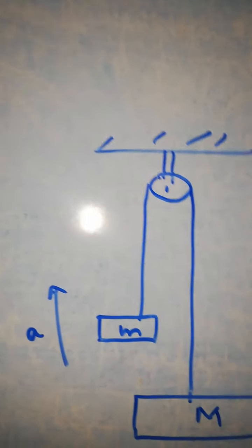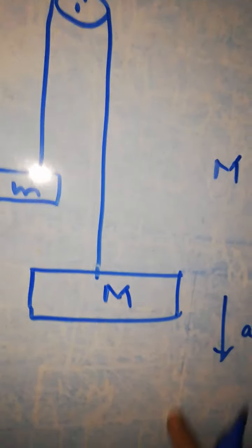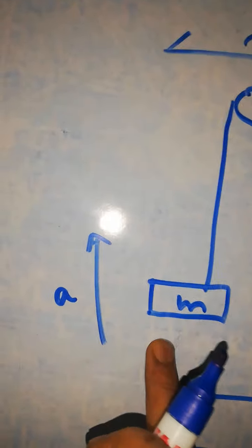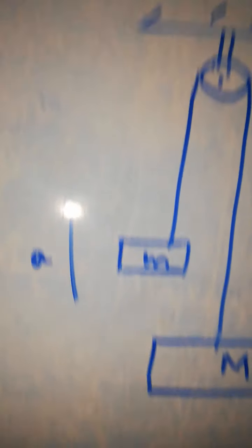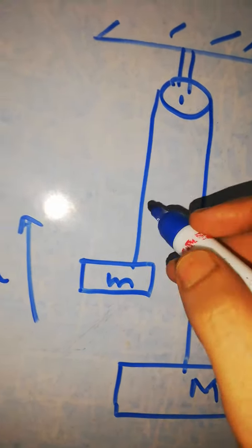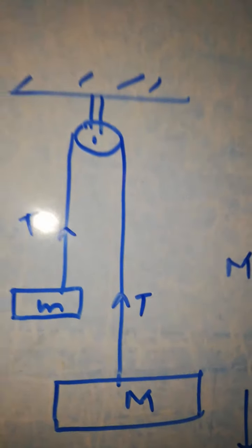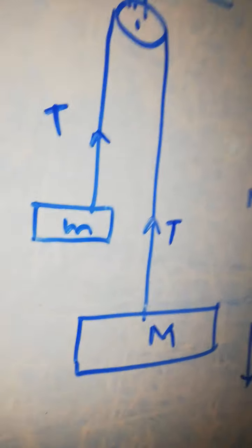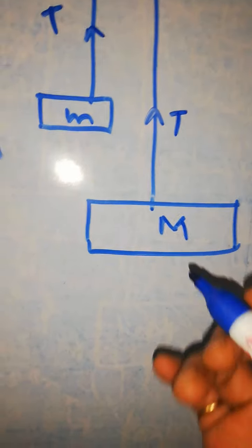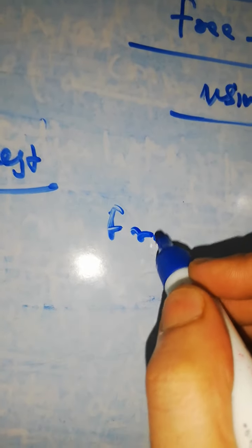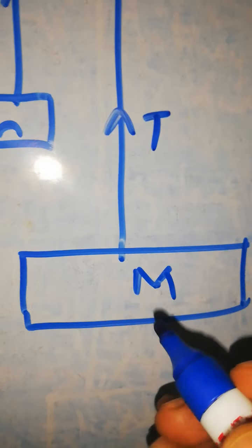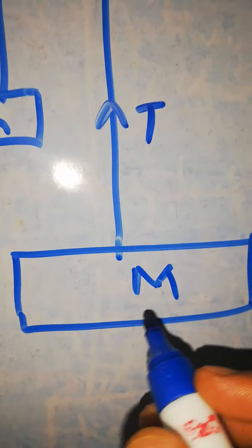When the system is allowed to move, the heavier body comes down with acceleration A and the smaller body goes up with the same acceleration. We need to calculate this acceleration and also the tension developed in the string. We will do this with the help of the free body diagram. A free body diagram is a picture in which all the forces acting on a particular body are shown.